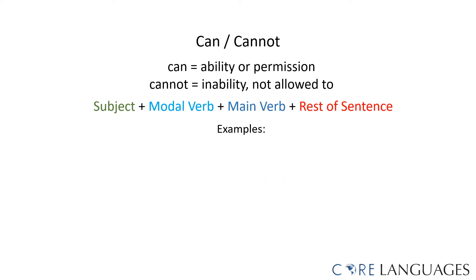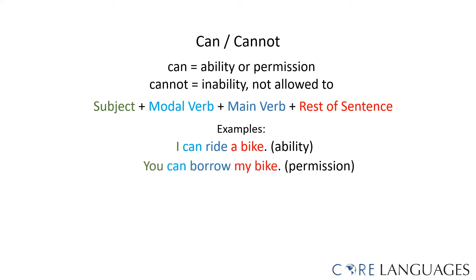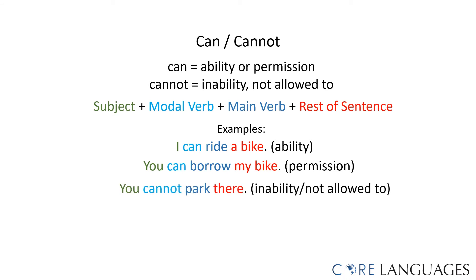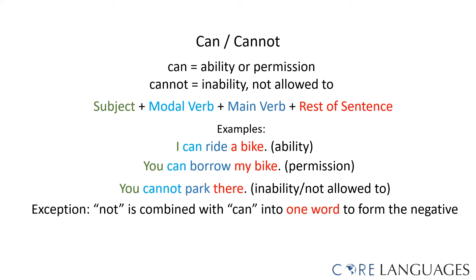Let's look at examples of sentences that use the modal verb CAN or CANNOT. CAN is used to express the ability or the permission to do something, and CANNOT is used to express the inability or when we are not allowed to do something. The word order is the same. For example, 'I can ride a bike' — this sentence expresses ability. 'You cannot park there' — this expresses inability or that you are not allowed to park there.